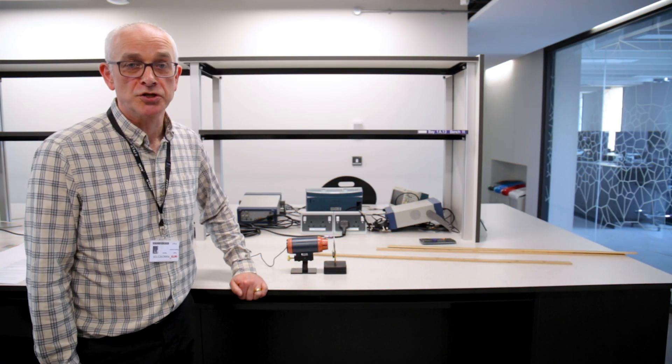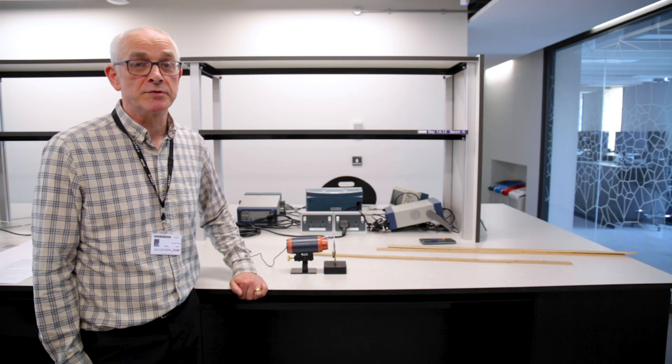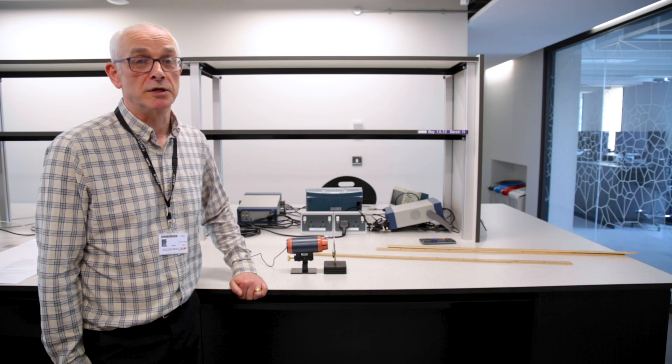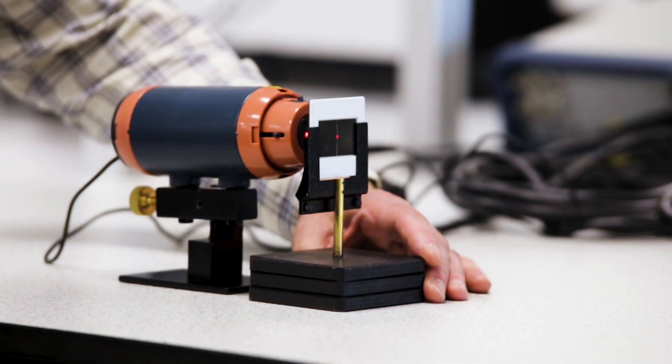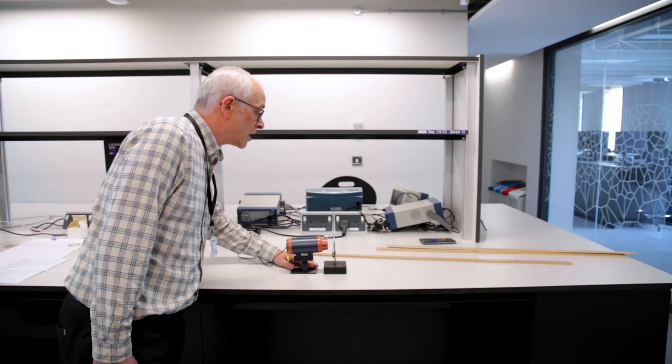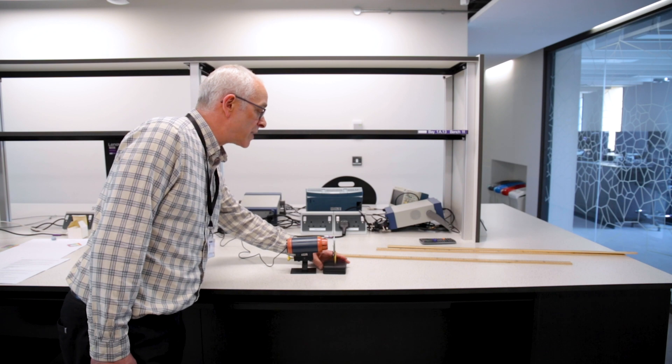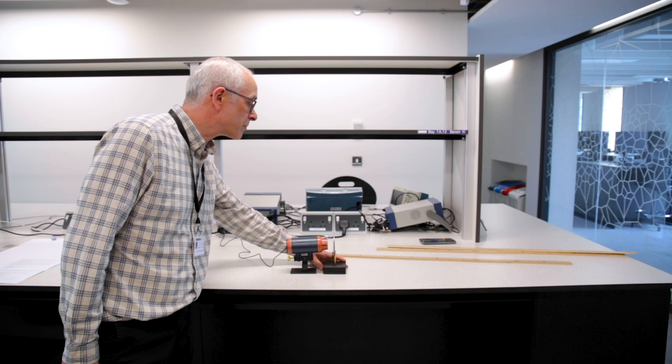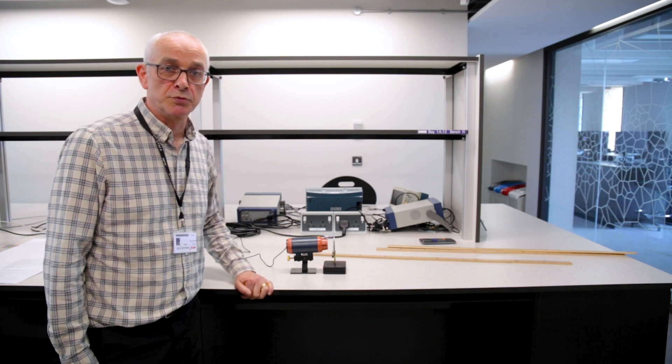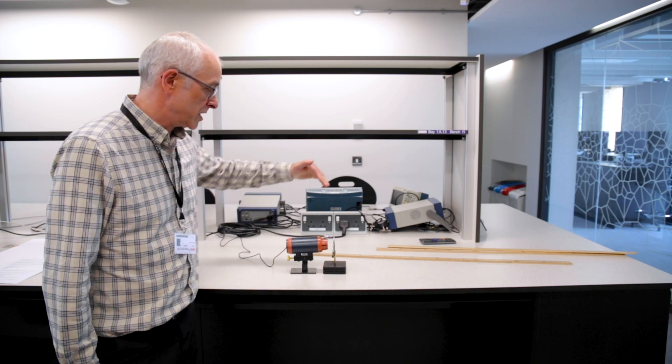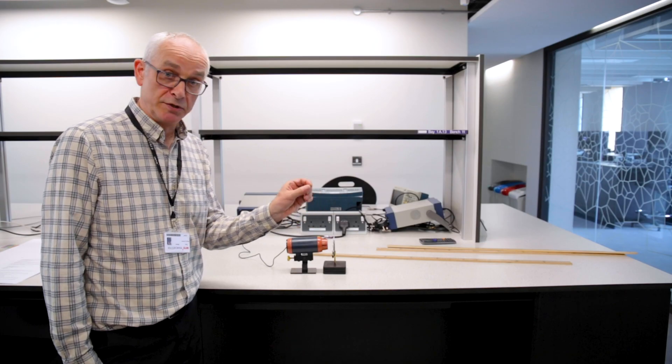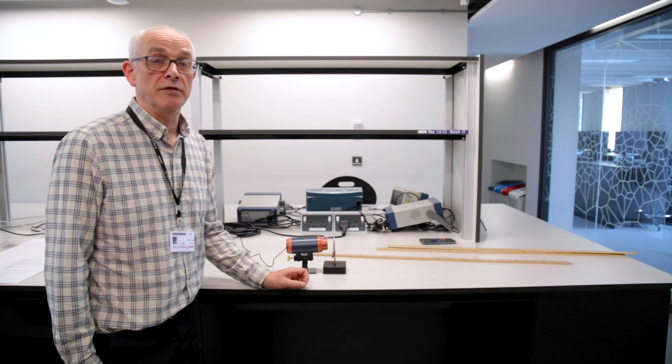We're going to start off with the Young's slits experiment, a very famous experiment performed about 220 years ago by Thomas Young who actually proved that light was a wave. To do this we need to take a bench laser and project it onto a pair of Young's slits which are very fine narrow slits. There are then three measurements we need to take: the distance from the slits to the screen, the distance between the two slits, and the distance between the fringes on the interference pattern.